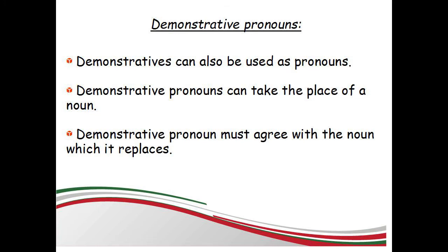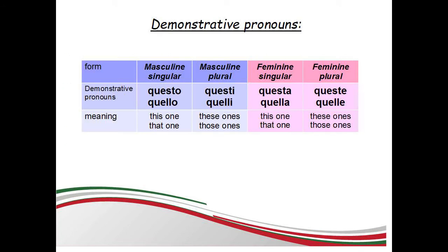Here are their four forms. Masculine singular: questo — this one; quello — that one. Masculine plural: questi — these ones; quelli — those ones. Feminine singular: questa — this one; quella — that one.